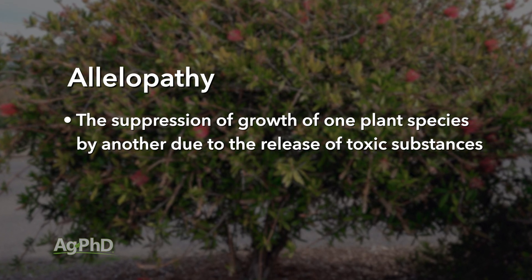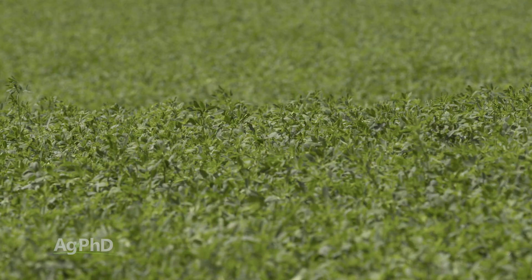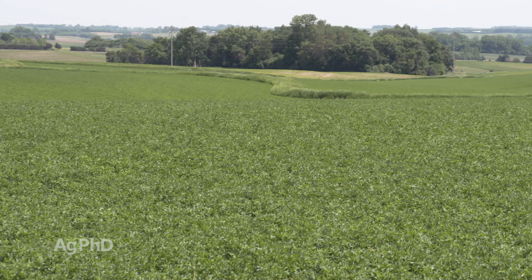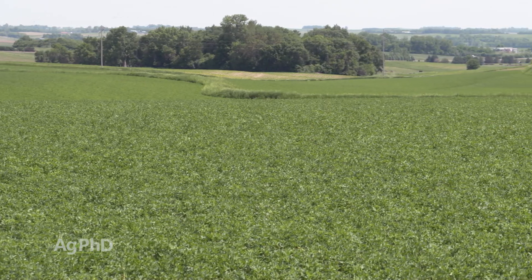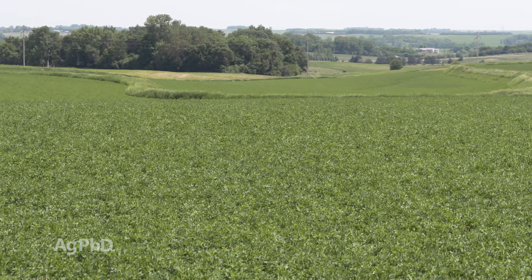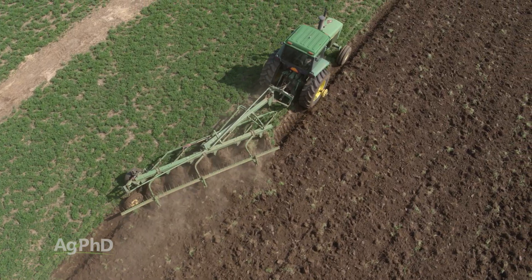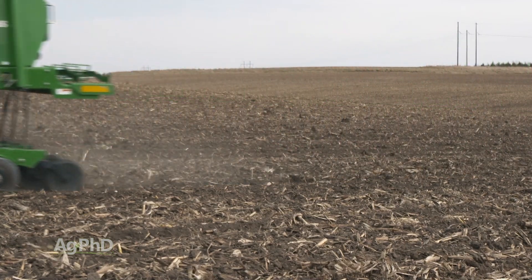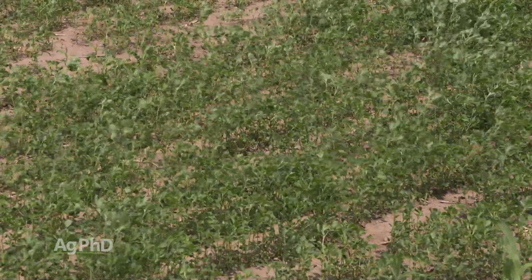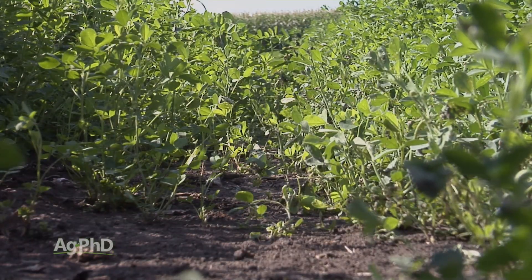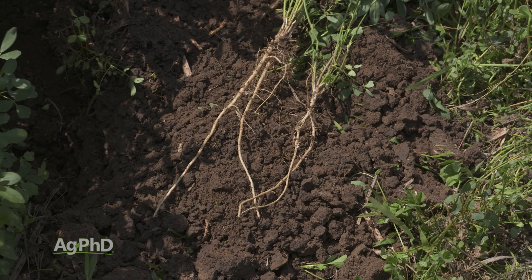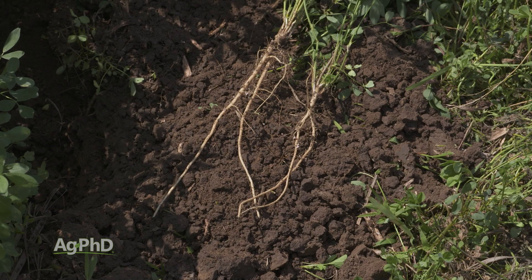It's a natural pesticide. Here's our example: let's say you have alfalfa, like we do on our farm, and it's been a great crop, so you want to plant alfalfa again. If you till today and then seed alfalfa tomorrow, that alfalfa you seed may not grow very well. The reason is because alfalfa puts out this natural pesticide — what we call allelopathy — which basically tries to prevent other alfalfa plants from growing in that field.